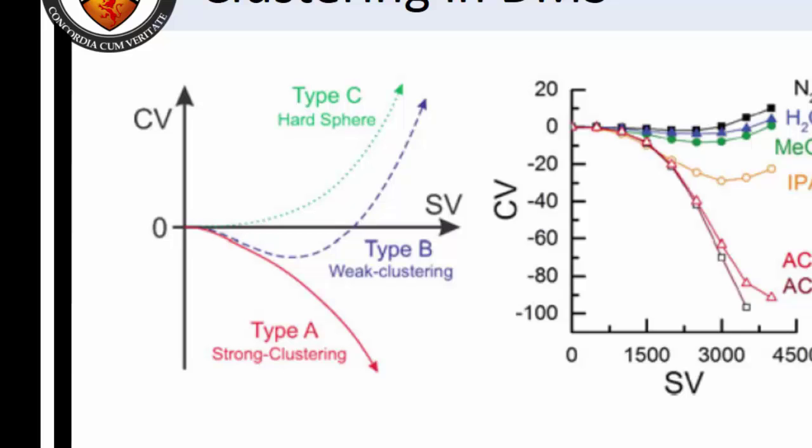For cations passing through an inert, non-interacting environment, we find that for optimal transmission, CV increases as SV increases. If we introduce a solvent vapor that interacts strongly with the cations, CV instead decreases with increasing SV.